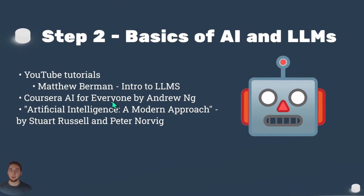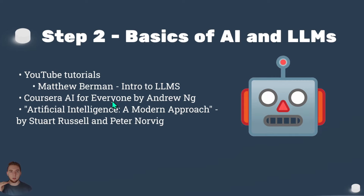Step two is the basics of AI and large language models. It is crucial to learn the basics — how AI models are created, how they're trained, how large language models work, and what their pitfalls are. You need to know these things, because if you don't, there are going to be holes in your code — things that just don't work because you are missing that fundamental understanding of how AI works.